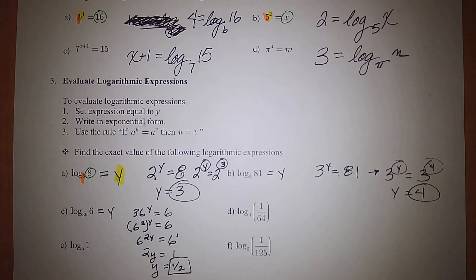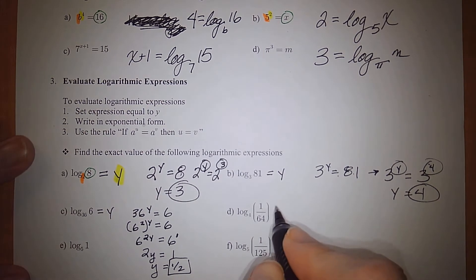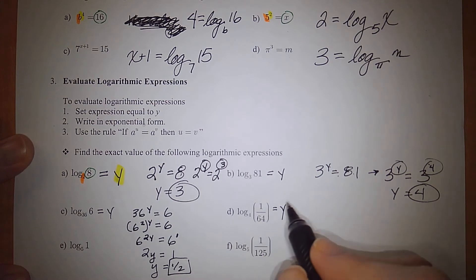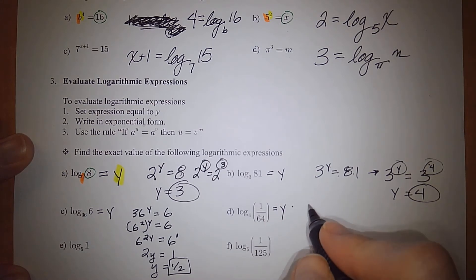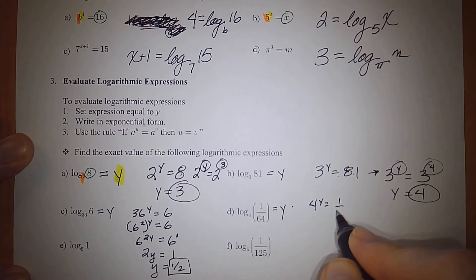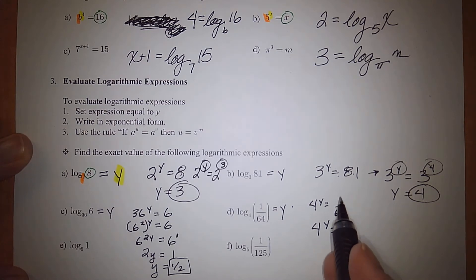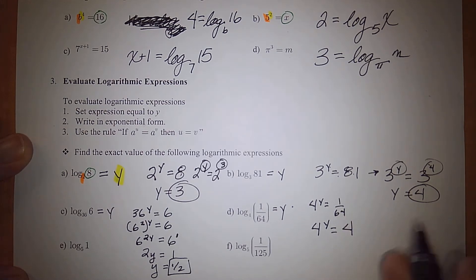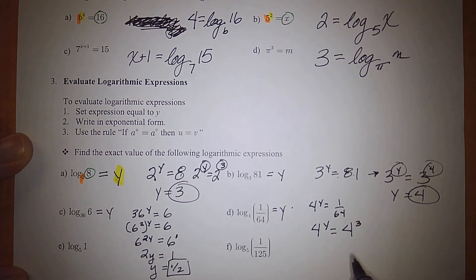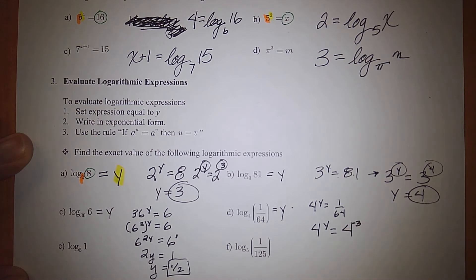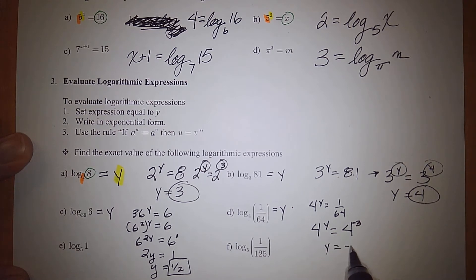For part D, set it equal to y and write in exponential form: 4 to the y equals 1/64. Writing in terms of 4: 4 to the 3rd is 64, so to get 1/64 we use a negative exponent — 4 to the negative 3rd equals 1/64. Therefore y equals negative 3.